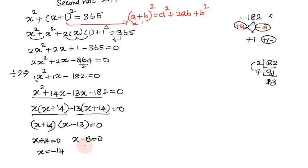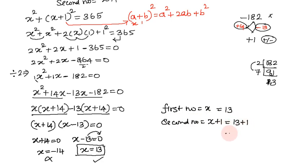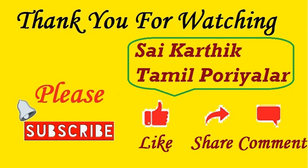So x plus 13 equals 0 gives x equals minus 13, and x minus 14 gives x equals 14. Since we need positive integers, x equals 13 is the valid answer — wait, the correct positive value is x equals 13. So the first number is 13, the second number is x plus 1 equals 14. The answer is 13 and 14. Thank you.